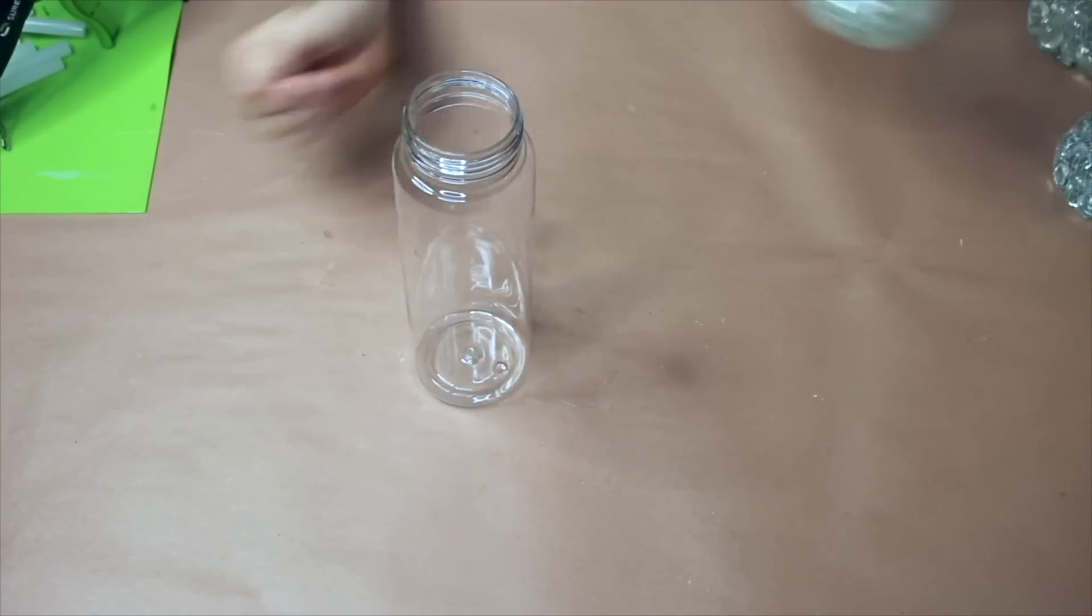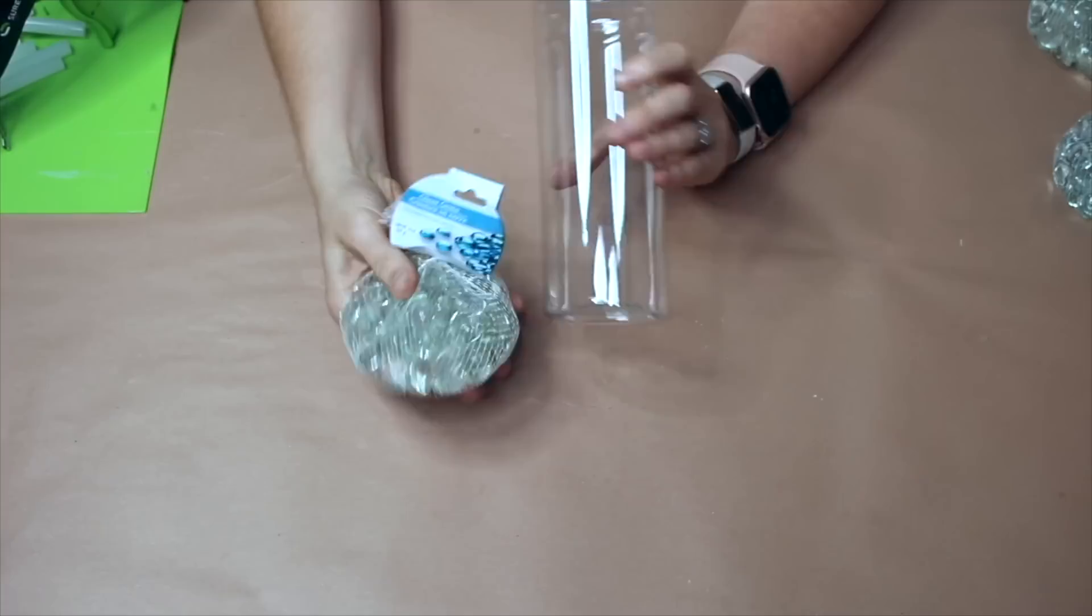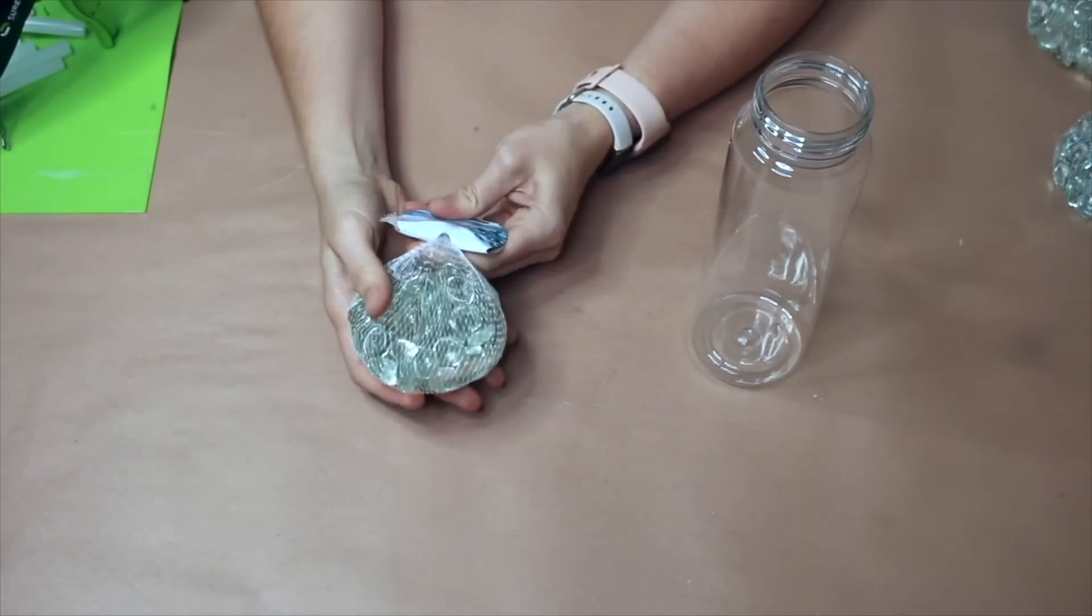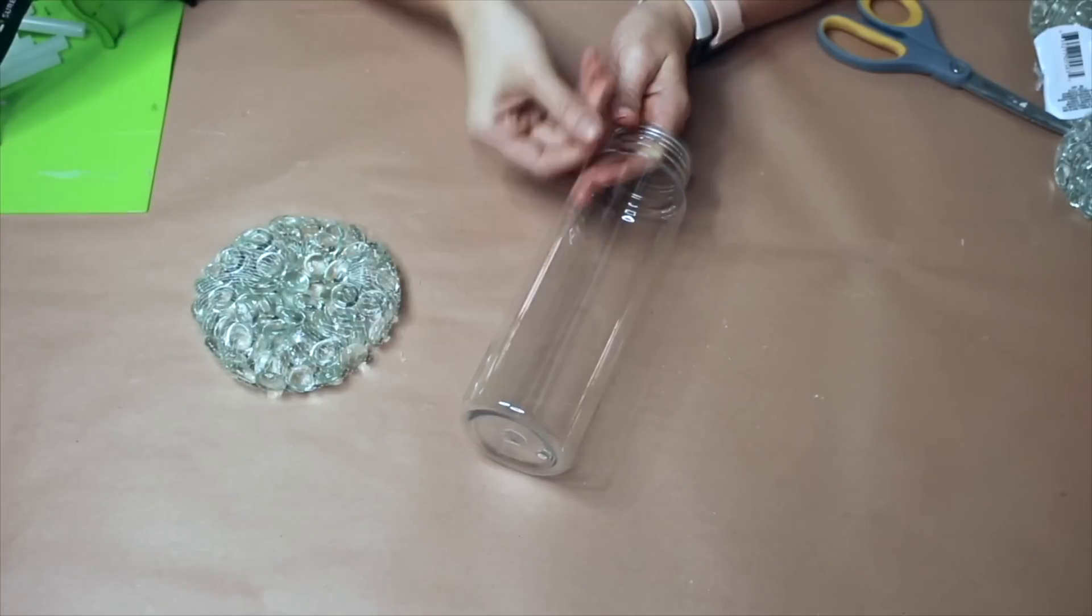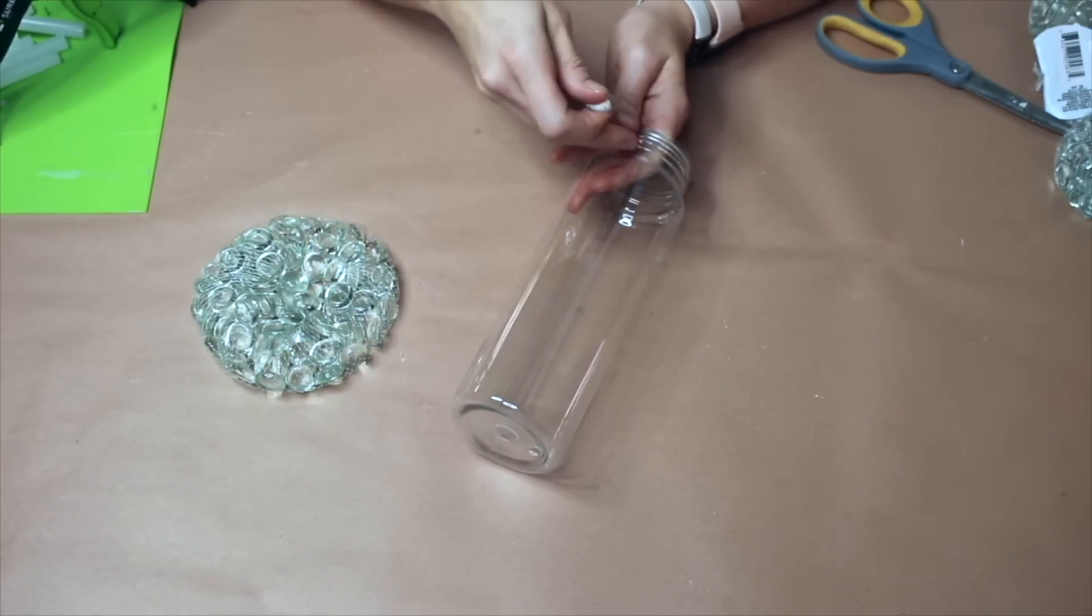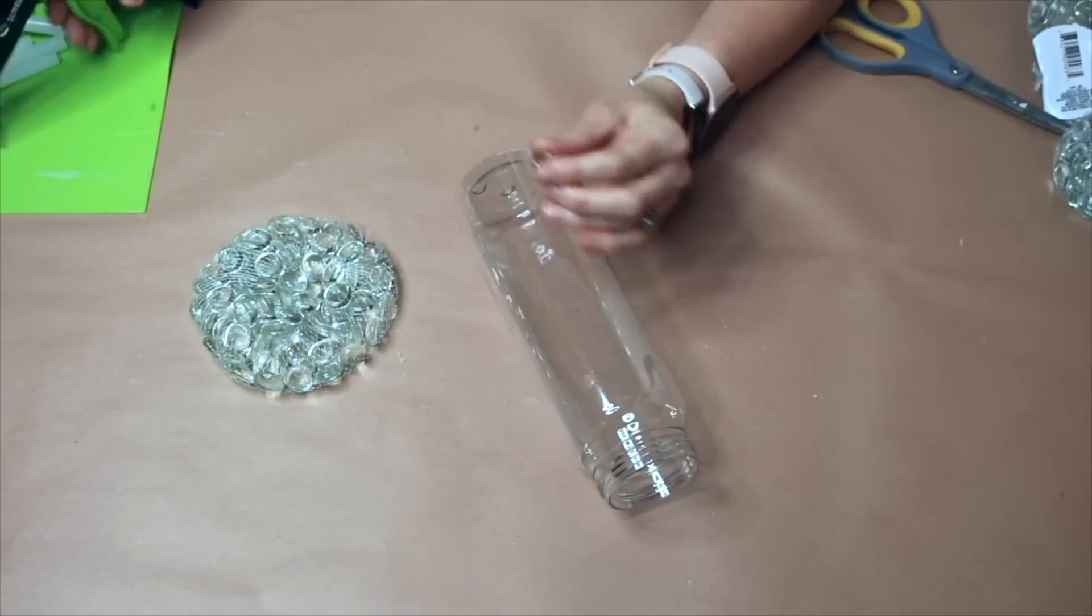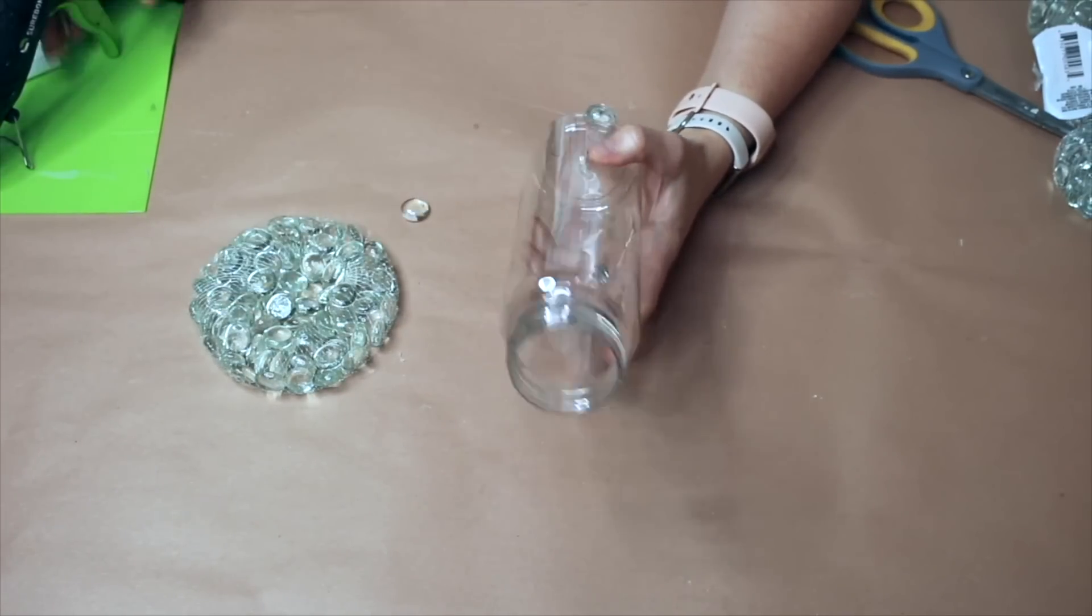And what we're going to do first is we are going to be gluing some of these little gems that you can find at Dollar Tree to this cylinder. I want this to kind of be random. I want these to kind of fit together, so I'm going to start from the bottom and work my way up.